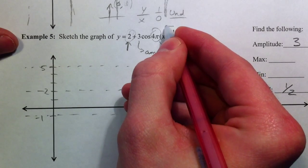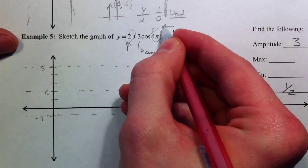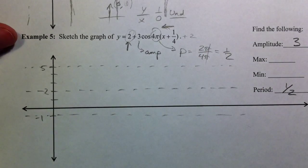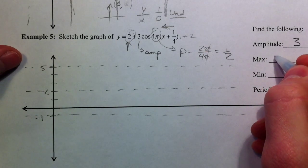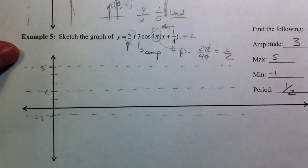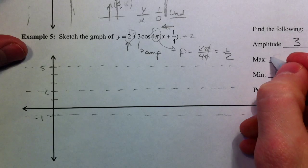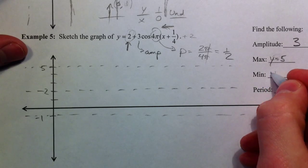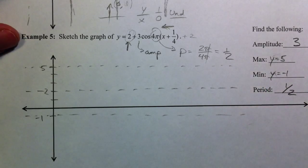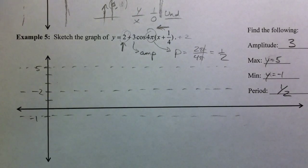This 1 fourth causes it to go to the left 4. Sorry, so the max was 5. And the min was negative 1. And we could call it a line. Name it as a y equals 5 and a y equals negative 1.